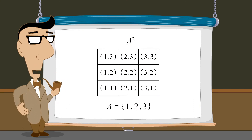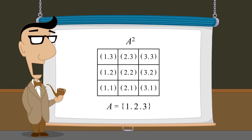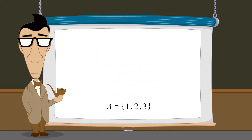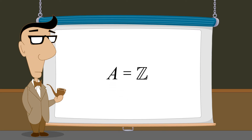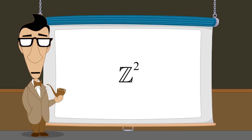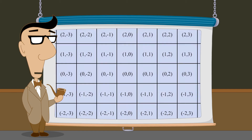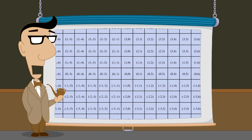Set A does not have to be a finite set of numbers. We can also create Cartesian products of infinite sets. For instance, set A could be the set of integers Z. Forming a Cartesian product of the set of integers with itself creates an infinite set of ordered pairs Z-squared, whose elements are every possible combination of two integers. We would need an infinitely large grid to represent all the ordered pairs in Z-squared. Instead, each ordered pair can be represented by its position in the grid, each pair corresponding to a unique point.